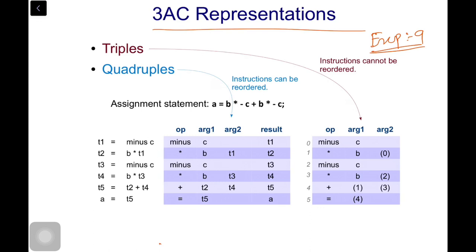We have done the same example when we started with the lecture. We know that we have two representations: quadruples and triples. There is one more representation called indirect triples, but we are not taking that into consideration right now. So we have two representations, quadruples and triples, and how they are represented is shown in the given example.